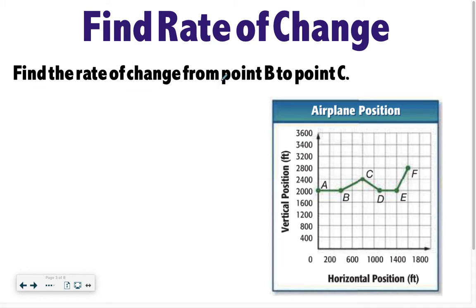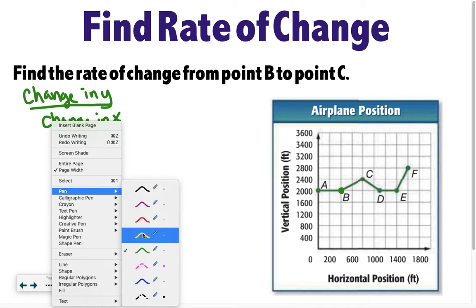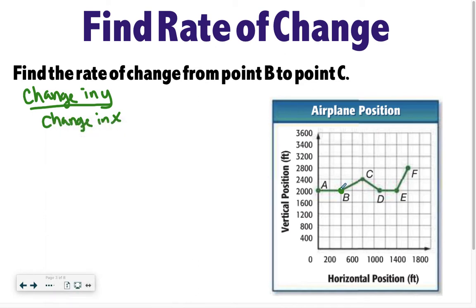We are going to find the rate of change from point B to point C. And the way that you find the rate of change is you do the change in Y over the change in X. So remember, Y is always the up and down. So if we're going from B to C, I'm actually going to change color so it's a little easier to see on that graph. So B is at 2,000 feet.